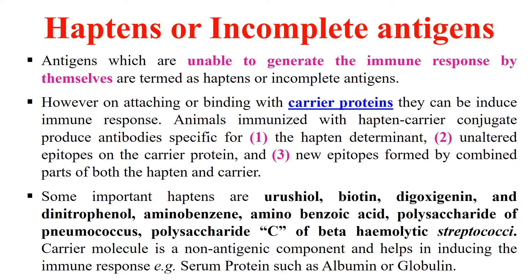Now let's discuss what haptens are. These are also sometimes called incomplete antigens. Some antigens can only interact with immune cells but are unable to activate the immune response. These weak antigens are known as haptens, or sometimes incomplete antigens, because they are not able to activate the immune response — they can only interact with immune cells but cannot activate the immune system.